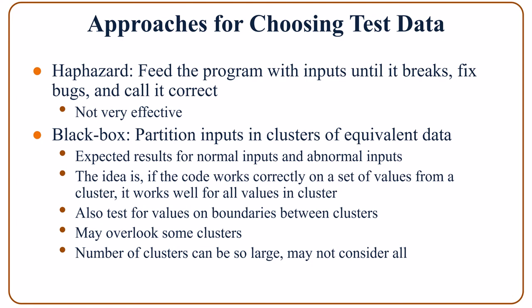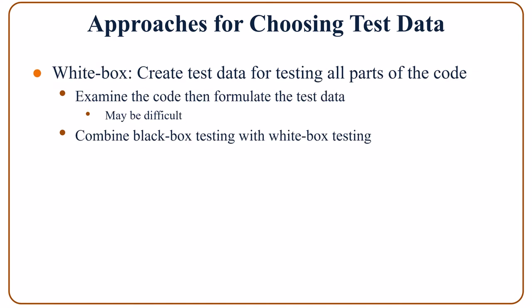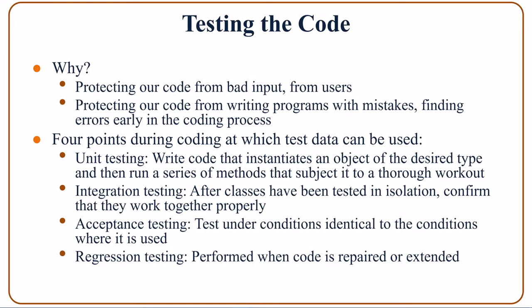This approach is called the black box approach because we don't care about the content of the method. In the third approach, called the white box approach, we examine the code and formulate the test data from there. However, this approach may be very difficult, so we may combine the white box and the black box approaches. We test code to protect it from bad user input and program mistakes, so that we can find errors early in the coding process.